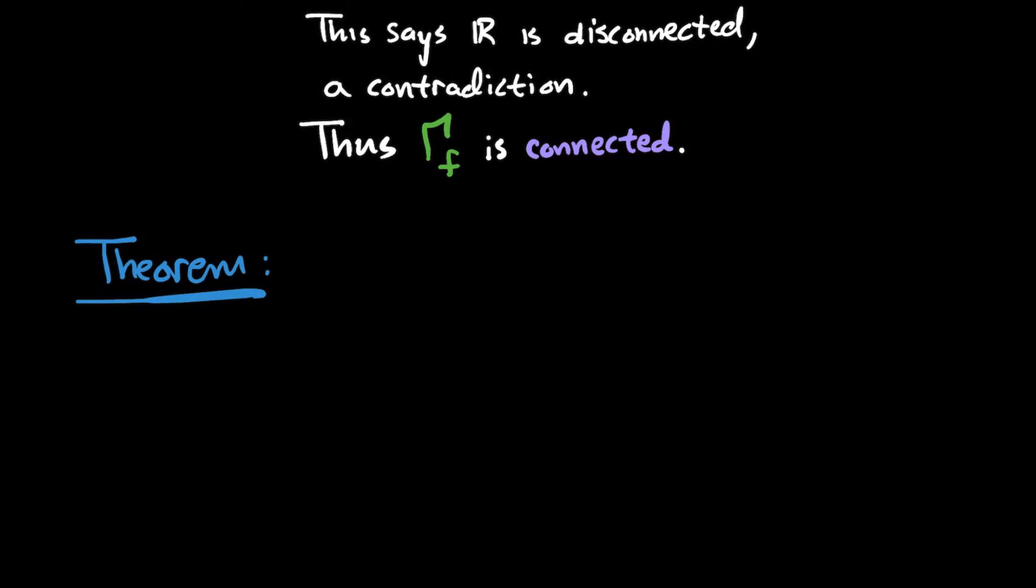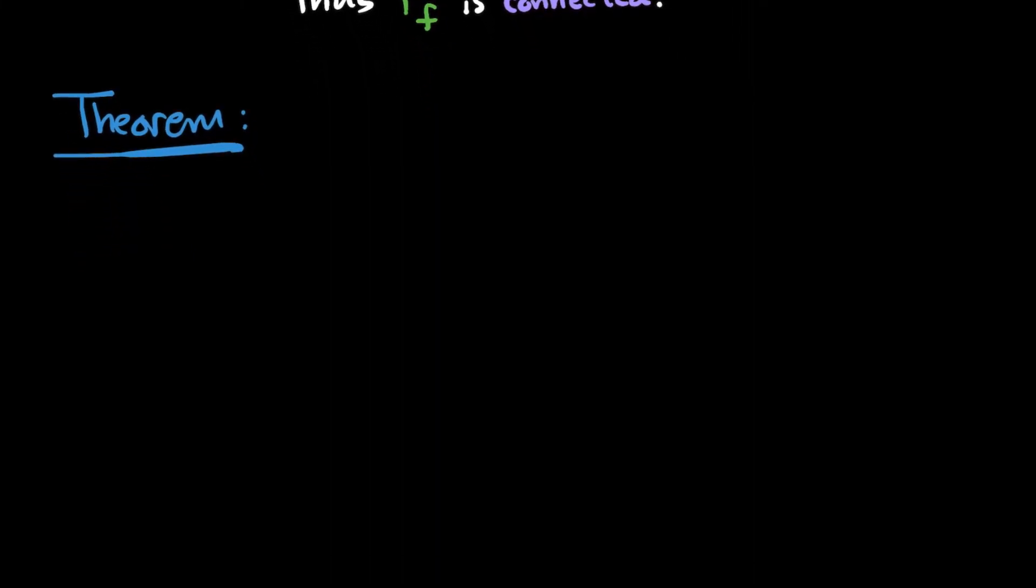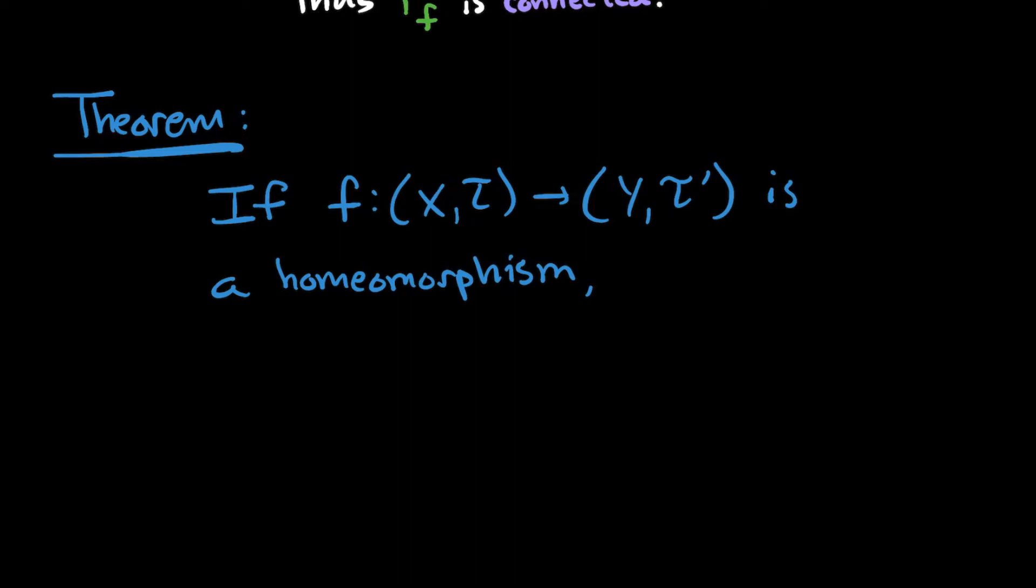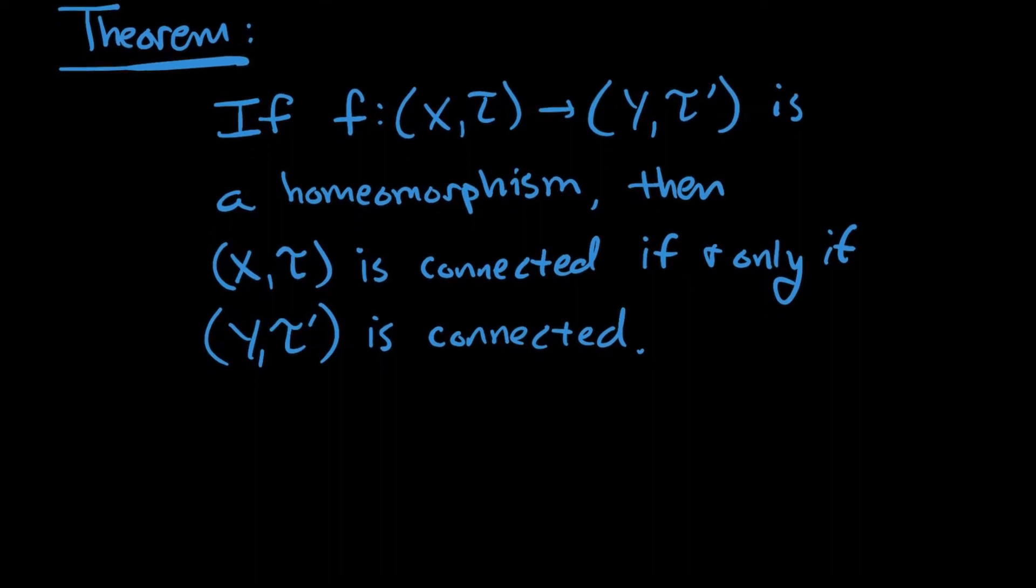So what's our theorem that ties together homeomorphisms and connectedness? If you have got a homeomorphism between two topological spaces, then one space is connected if and only if the other space is connected. So another way to say this is that connectedness is a topological property. It's preserved under homeomorphisms. So we're going to prove that, and then I'm going to say a little bit more about what I mean after the proof.